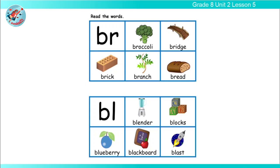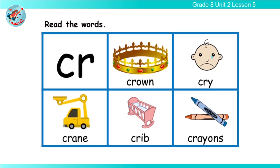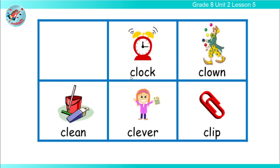Now I'm going to give you another set of words. Read these words: crown, cry, crane, crib, crayons. The significant sound in these words is the 'cr' sound. And look at these words — read them also: clock, clown, clean, clever, clip.